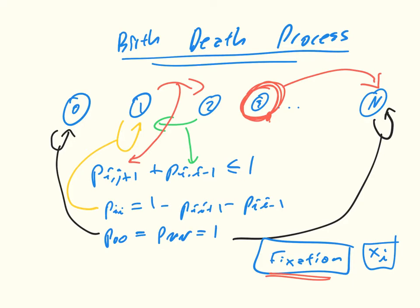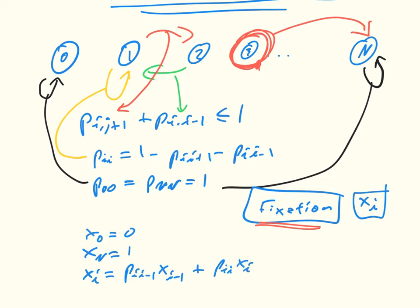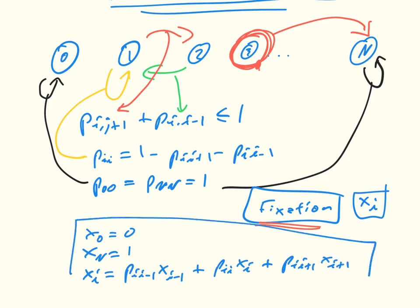We can immediately write down a couple of things about this. We see that X_0 is 0, because if we're at 0, we're never going to be fixed. X_n is 1, because we're already there. And then we have this general idea that X_i can be written recursively as: it's the probability that we go down times X(i-1), plus the probability that we stay where we are times X_i, plus the probability that we go up times X(i+1). These equations are defined for 0 < i < n and kind of define our system.